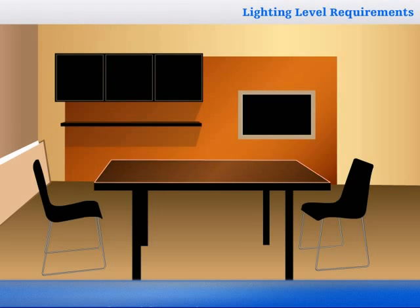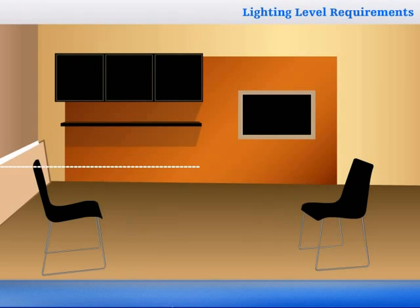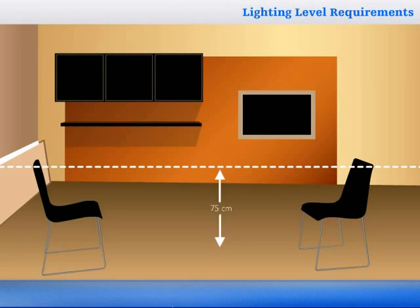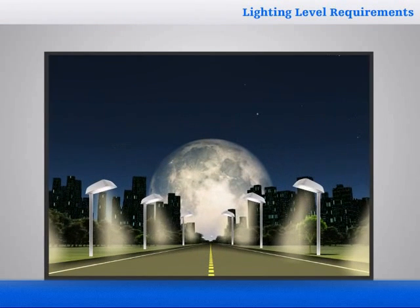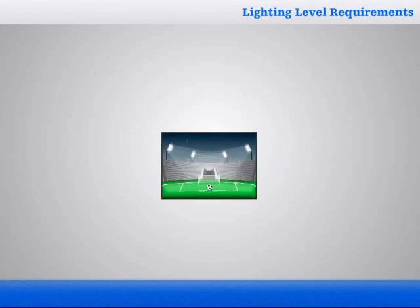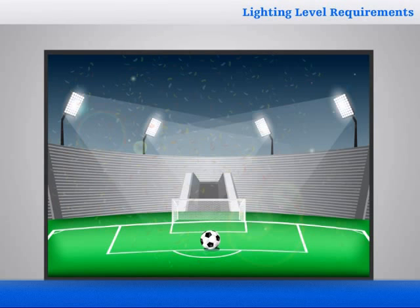Indoors, the lighting level is usually measured on the working areas — for example, the desks. But where the precise working area is not known, the lighting level on an imaginary horizontal surface about 75 cm above the floor is specified. In road lighting, it is the road surface, and in sports lighting, the horizontal playing area.